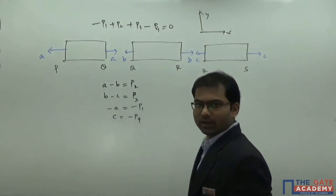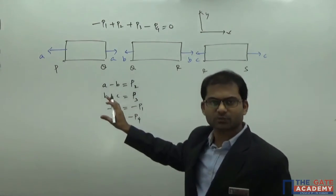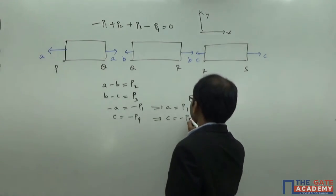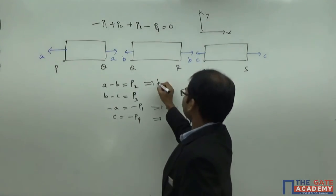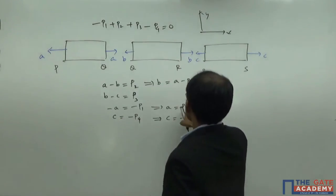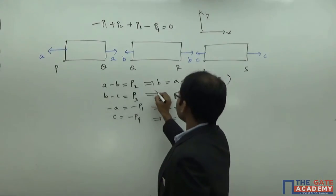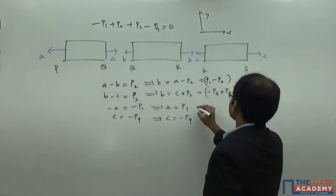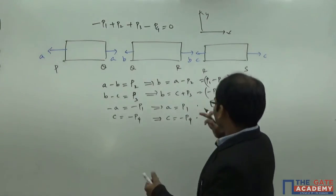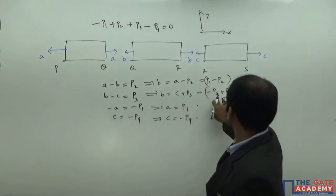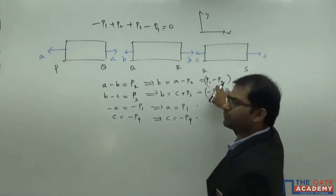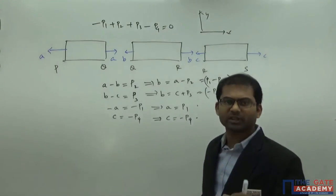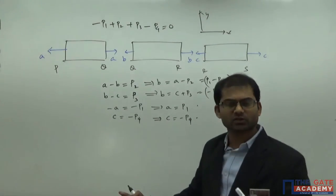Now let us find the values of all unknown forces acting on sections PQ, QR, and RS. From the equations: A equals P1, C equals minus P4. From A minus B equals P2, we get B equals A minus P2 equals P1 minus P2. From B minus C equals P3, we get B equals C plus P3 equals minus P4 plus P3. Both expressions for B are the same — they are not independent equations, but represent a single equation.